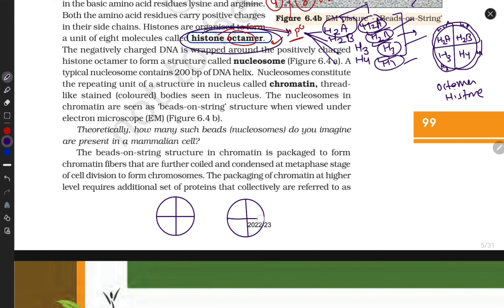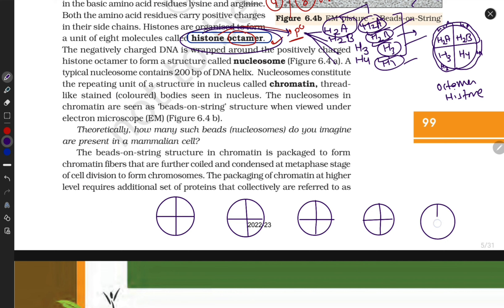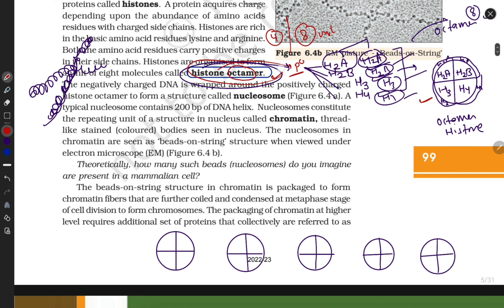What happens with this histone octamer and how does it form a nucleosome? DNA never exists in a free form — it coils itself. The histone octamer is a protein. Octamer is formed by histones, and histones are proteins. Proteins are made up of amino acids.